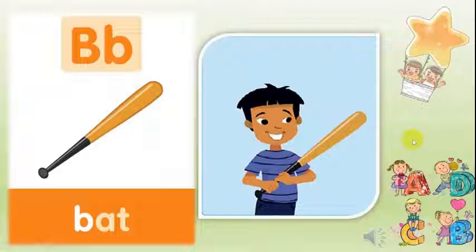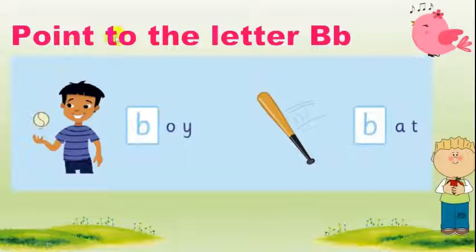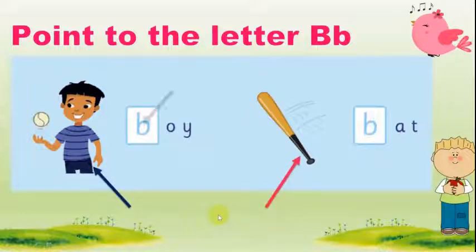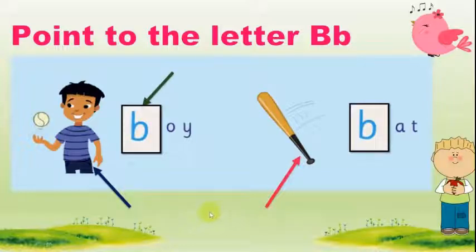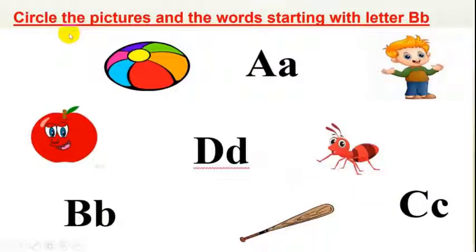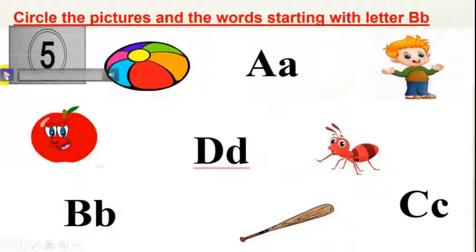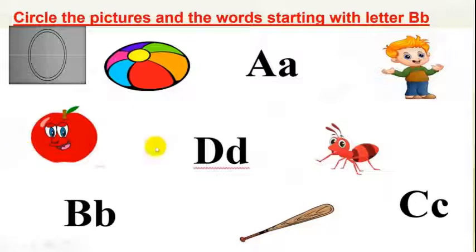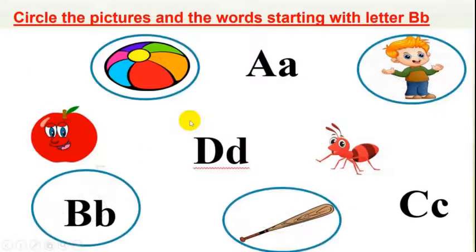You can practice that at home. Point to the letter B — you can see? Yes! Do you want to play a game? The name of the game is 'Who is Faster?' Circle the pictures and the words starting with the letter B. You have 5 seconds to think. Thumbs up! Your answer is — good job!